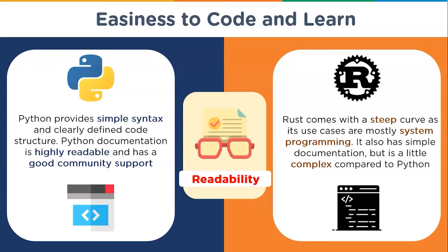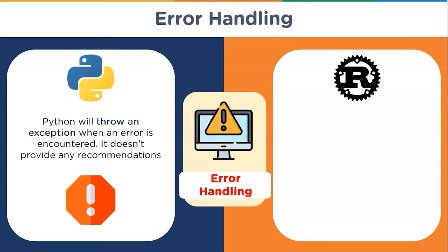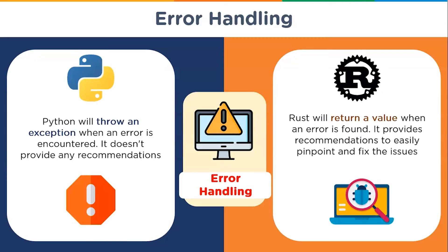Rust has some complex features which make it challenging to learn. Now let's check error handling with both languages. Python throws an exception when an error is encountered and notifies bugs after runtime — you have to wait until runtime to get addressable errors. Its job is only to find errors and throw them as exceptions; it doesn't provide any recommendations to fix these. On the other hand, Rust returns a value when an error is found.